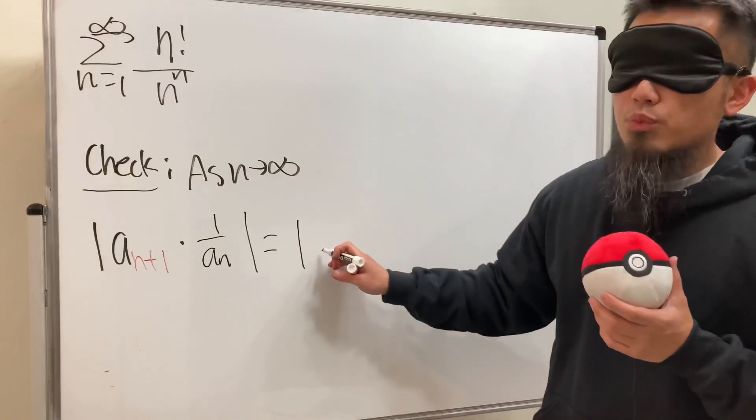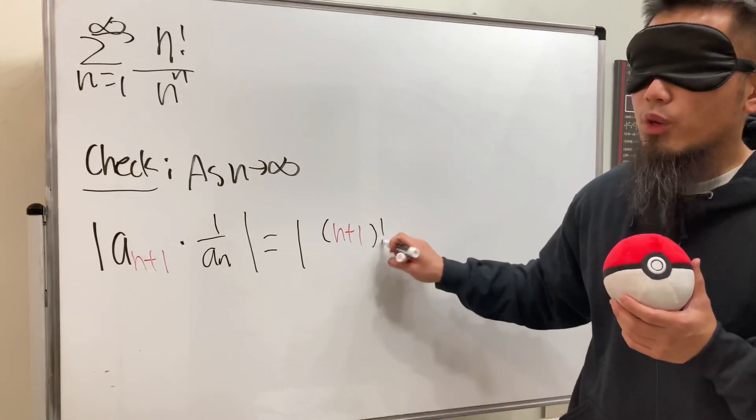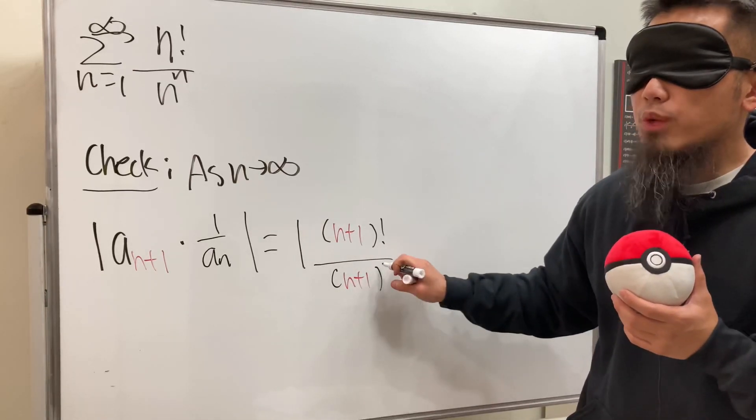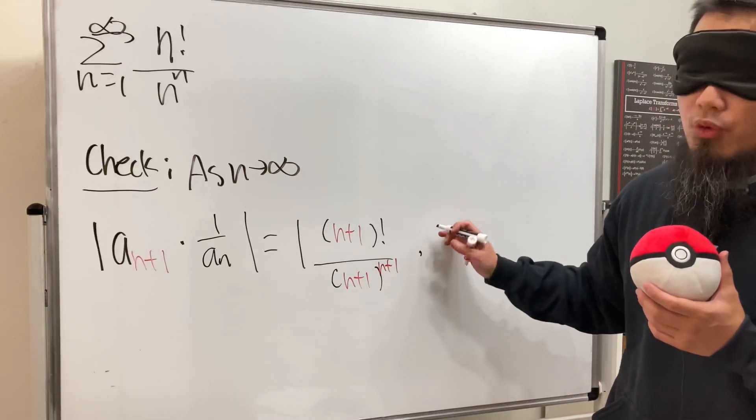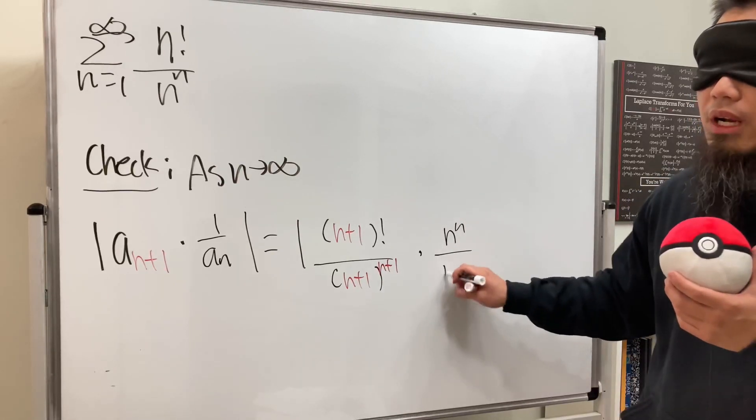As you can see, we will have the absolute value. a_{n+1} is just going to be (n+1) factorial over (n+1) raised to the (n+1) power. And then we multiply by 1 over a_n, which is just the reciprocal of the original. That's going to be n to the n over n factorial.